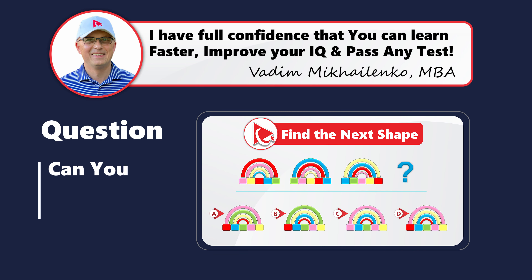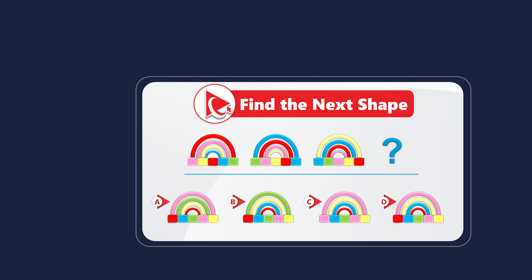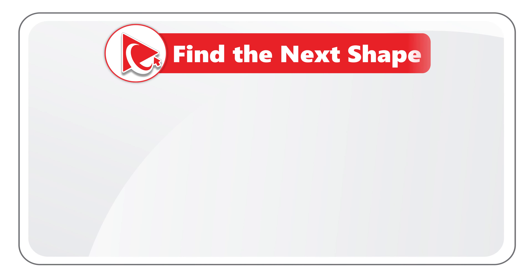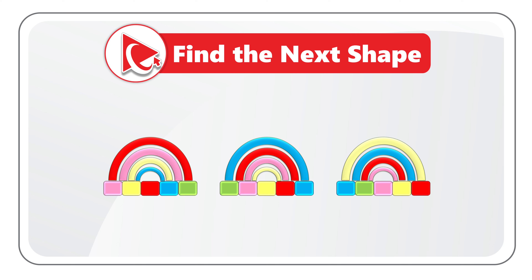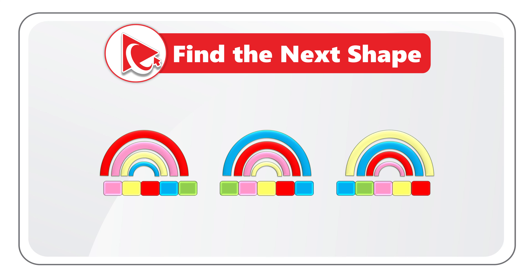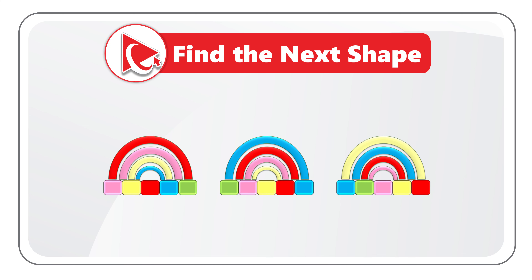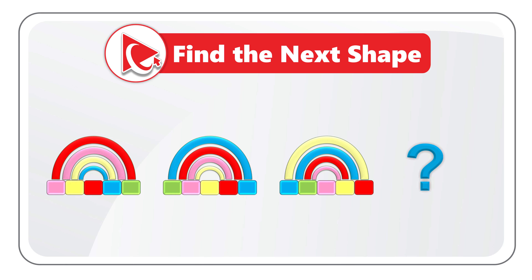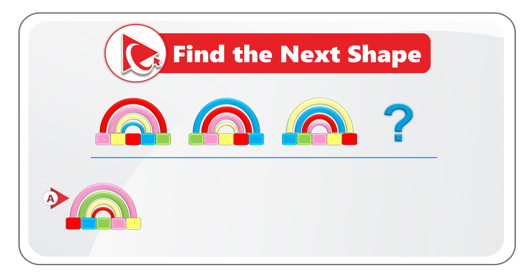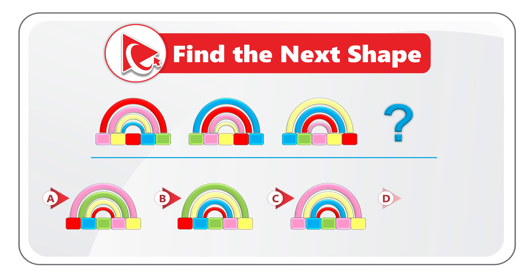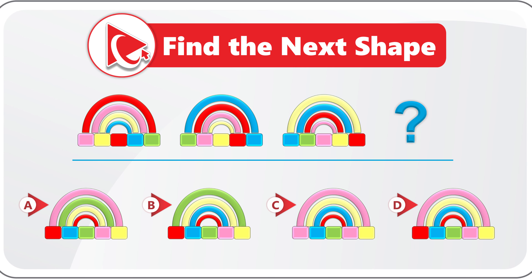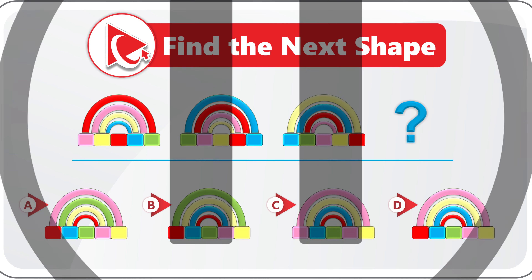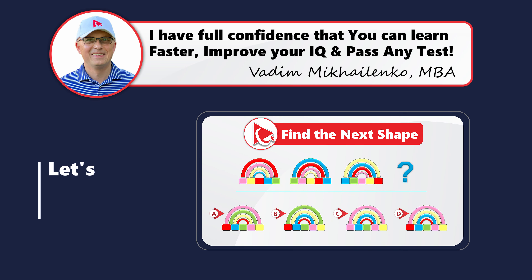Here's a very unusual question which tests your analytical skills, pattern recognition skills, as well as spatial reasoning. You're presented with three unusual shapes — a rainbow consisting of four sections on top, and five squares at the bottom. Each shape has a unique set of different colors. You need to detect the pattern and recognize shape number four out of four possible choices: A, B, C, and D. This is one of the tough questions — consider pausing this video to come up with the solution.